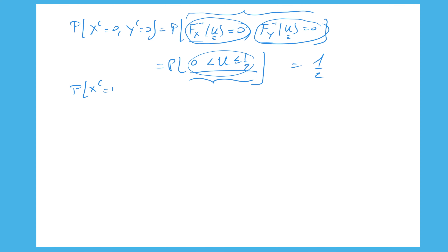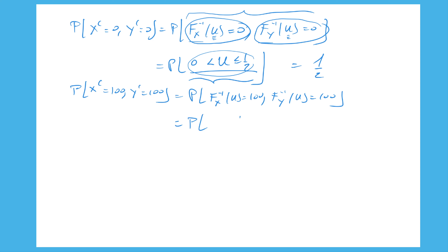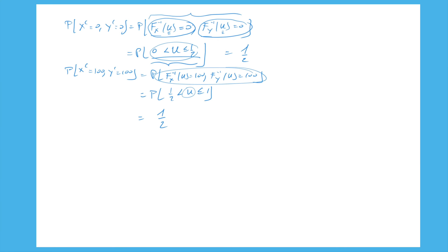Similarly, the probability that both XC and YC equal 100 is the probability that F_X^{-1}(U) = 100 and F_Y^{-1}(U) = 100. Looking at the inverse CDF formula, this is equivalent to U being in (1/2, 1]. The probability that a uniform distribution falls in (1/2, 1) is 1/2.